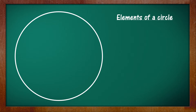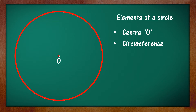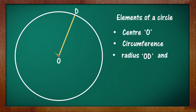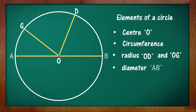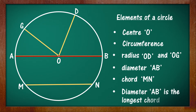The elements of a circle are: center, which is marked as O; the circumference, which is the boundary of the circle; radius OD and OG, which is the distance from the center of the circle to any point on its circumference; diameter AB, which is a line segment that passes through the center of the circle and both ends lie on the circumference; and chord MN, which is a line segment from one point on the circumference to another. The diameter is the longest chord of a circle.